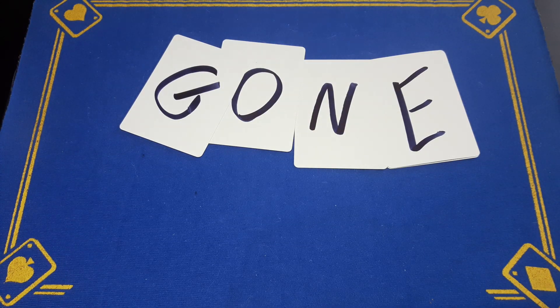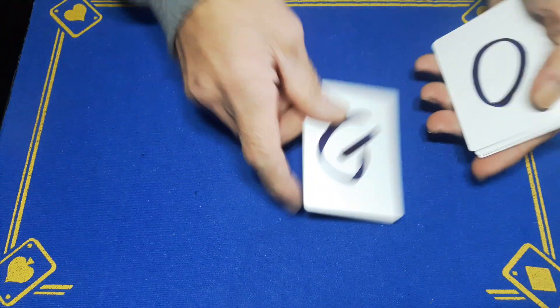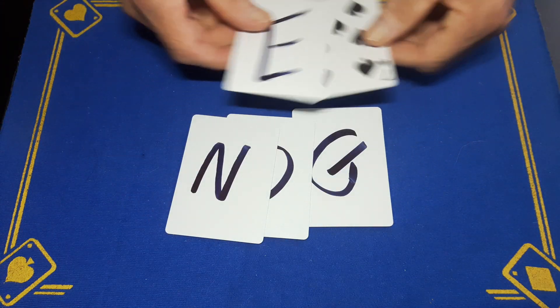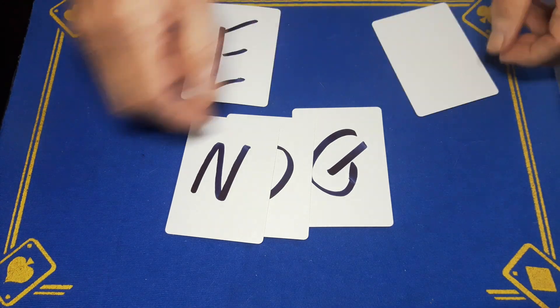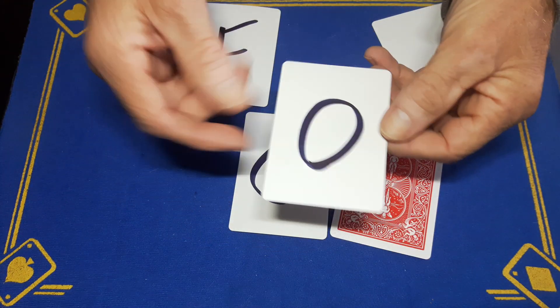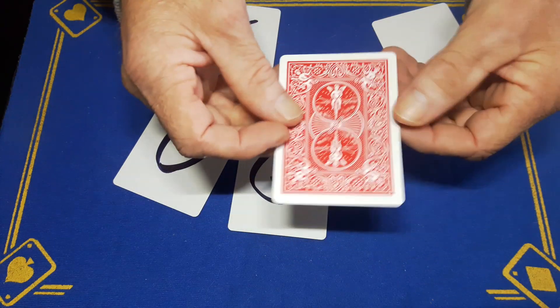Alright guys, Gaffed is back with the explanation to Gone. This trick requires five cards. You are going to have a red backed blank card with an N written on it that's going to go face down on the table.